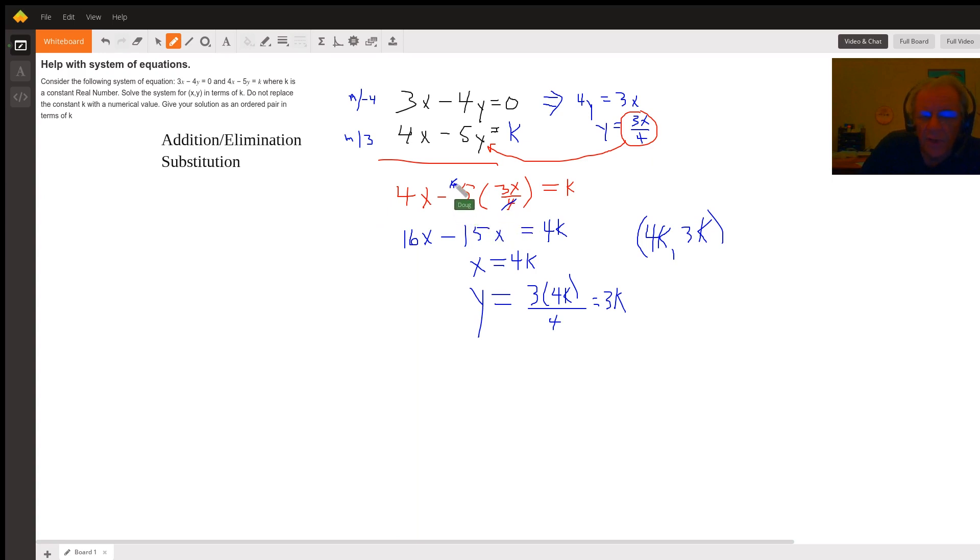I would multiply every term on both sides by 4 to get rid of this fraction. So 4 times the first term would give me 16x. Four times the second term—picture a little 4 right here being multiplied times this second term—the fours cancel out, we're left with minus 5 times 3x.